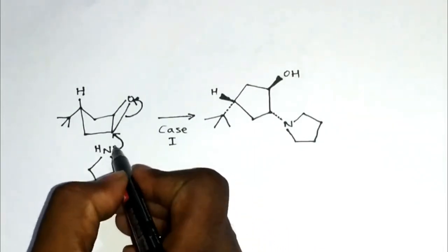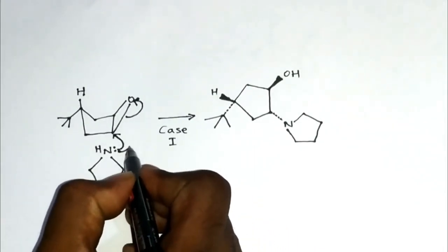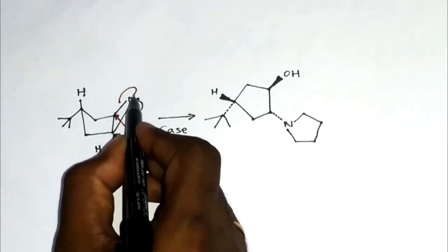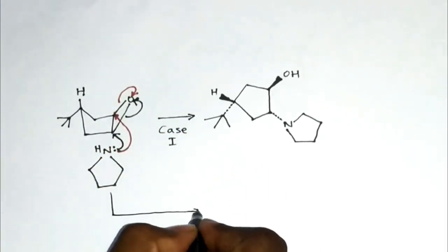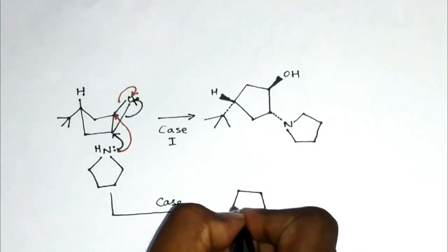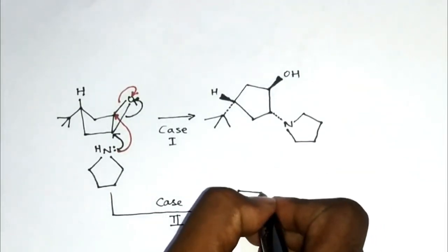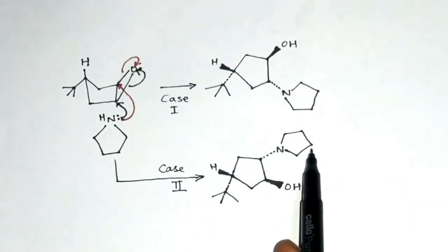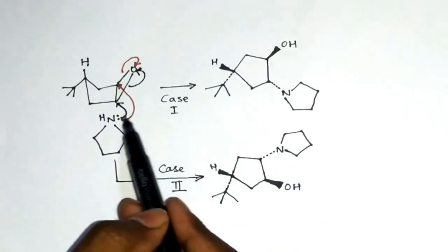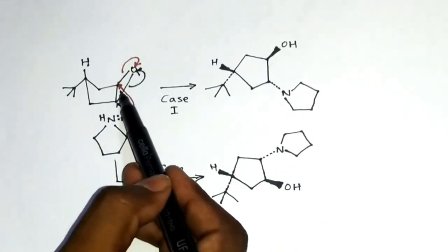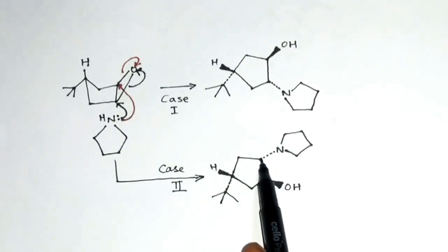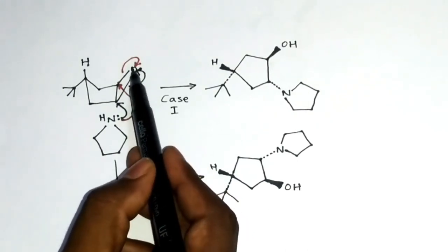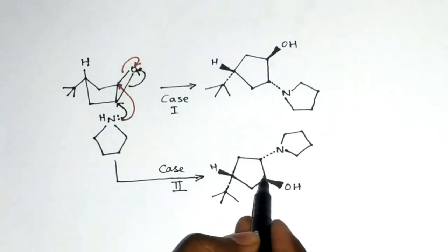Case 2: this lone pair of electrons might attack the carbon here. Accordingly, this bond will come onto the oxygen. Let us observe the product in case 2. The group over here — again it was attacking from the down part — so it will be below the plane of the paper. Similarly, as in case 1, the OH group will come above the plane of the paper.